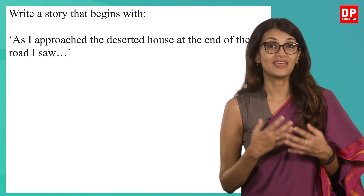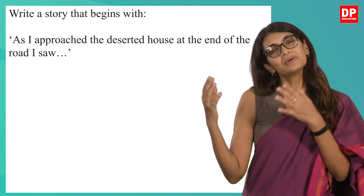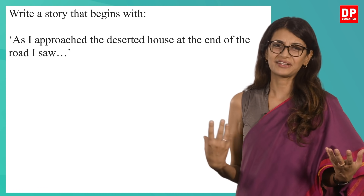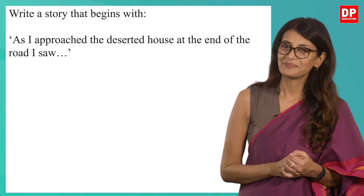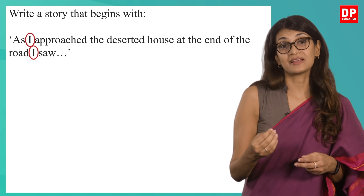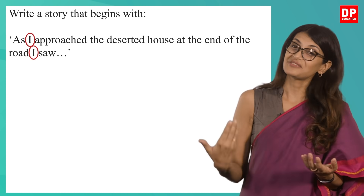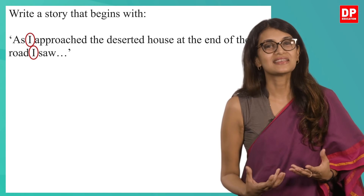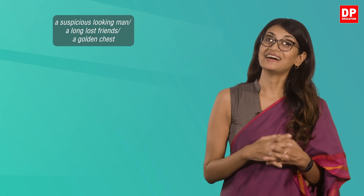Let's look at the 2017 paper. You are asked to write a story that begins with: 'As I approached the deserted house at the end of the road, I saw...' If you look at the title very carefully, you would notice that you are expected to continue the story from that introductory sentence. You would also notice that the sentence is already in first person, so you will be expected to use the first person throughout. Remember, when you use the first person you can include your thoughts and feelings in your narration.